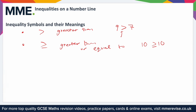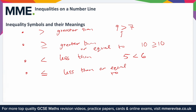Similarly, you can have less than — that would be this symbol, exactly the same just the other way around. So for example you could say 5 is less than 6. And again you could have less than or equal to, which is that symbol with the line underneath.